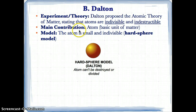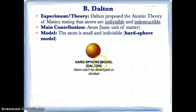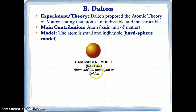Dalton's main contribution was the atom as the basic unit of matter related to elements. His model described the atom as small and indivisible — it can't be destroyed and it can't be divided. This was known as the hard sphere model, represented by one single sphere. It's hard, small, indivisible, and indestructible.